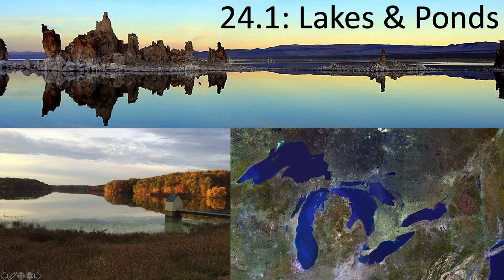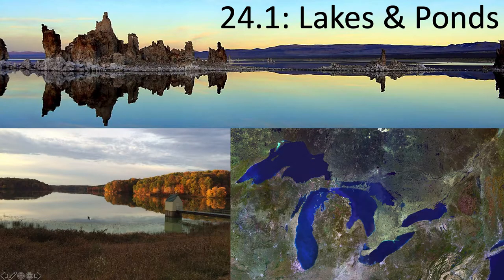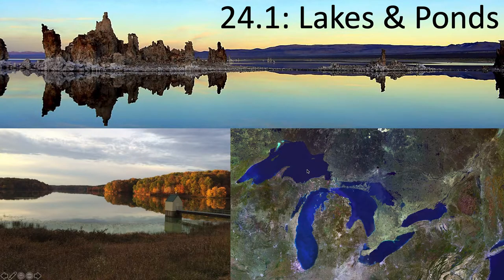Lakes and ponds vary in depth from one meter to more than 2,000 meters, and in size from less than a hectare to thousands of square kilometers. Ponds tend to be shallow enough that rooted plants can grow at the bottom because light can penetrate all the way down for photosynthesis. Some lakes are so large they mimic marine environments. Most have outlet streams or rivers, and ponds can sometimes be ephemeral — present one season and gone the next.